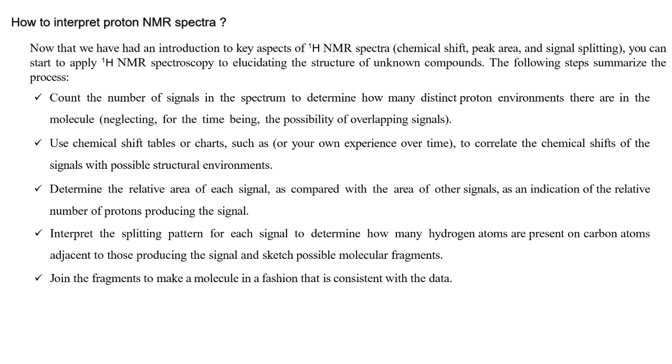Now, how to interpret proton NMR spectra? Now that we have had an introduction to key aspects of 1H NMR spectra like chemical shift, peak area, and signal splitting, you can start to apply 1H NMR spectroscopy to illustrating the structure of unknown compounds. These are the following structure illustrating processes: Count the number of signals in the spectrum to determine how many distinct proton environments there are in the molecule. So you have to calculate first how many signals are there.